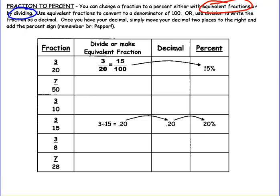Let's look at equivalent fractions. In this case, 3 twentieths can be changed to 15 hundredths, which gives you 15%. 7 fiftieths could be converted to 14 hundredths, which would be 14%.